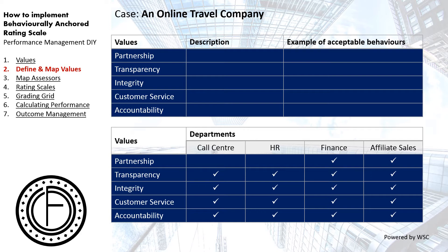The innovative part is to look at all the values, then map which ones you want to assess within a particular department. For instance, partnership has been mapped to finance and then affiliate sales. So within this context, you define what partnership really means as far as the behavior the organization wants to project — specifically within the context of finance and affiliate sales — so that those teams understand what acceptable behavior is expected of them.